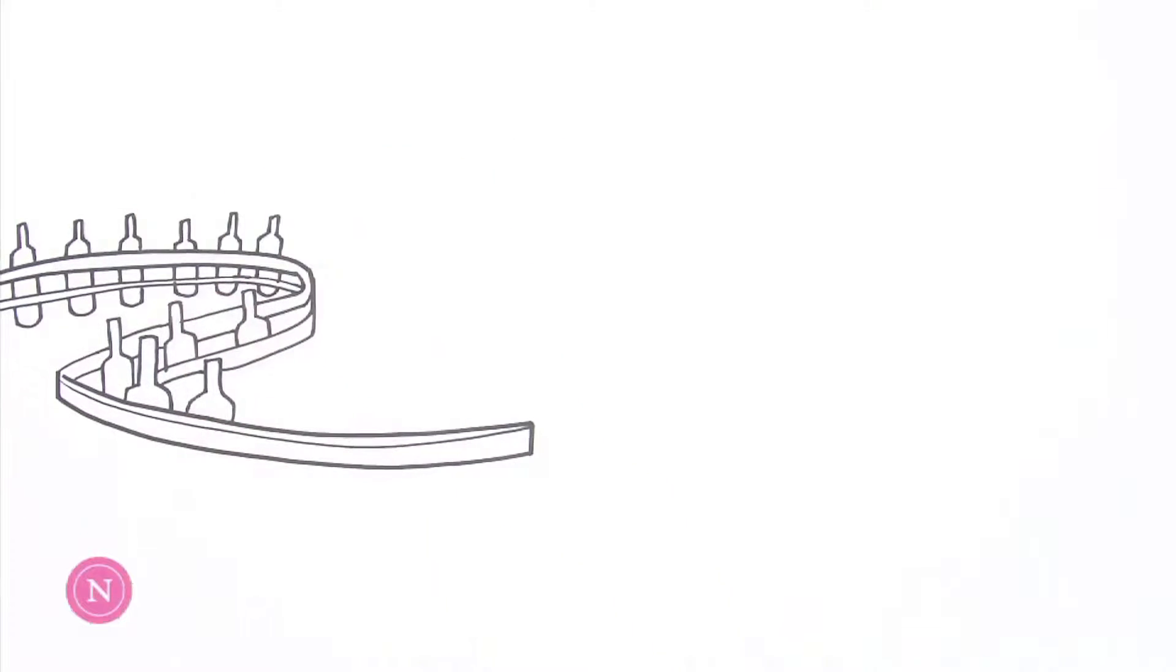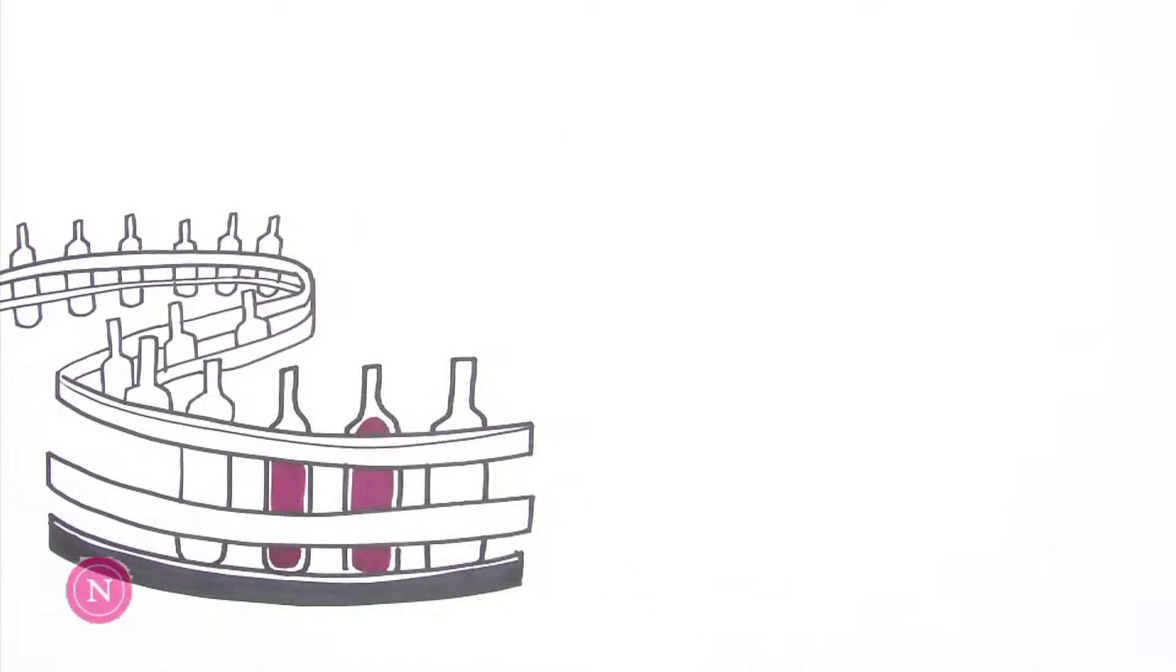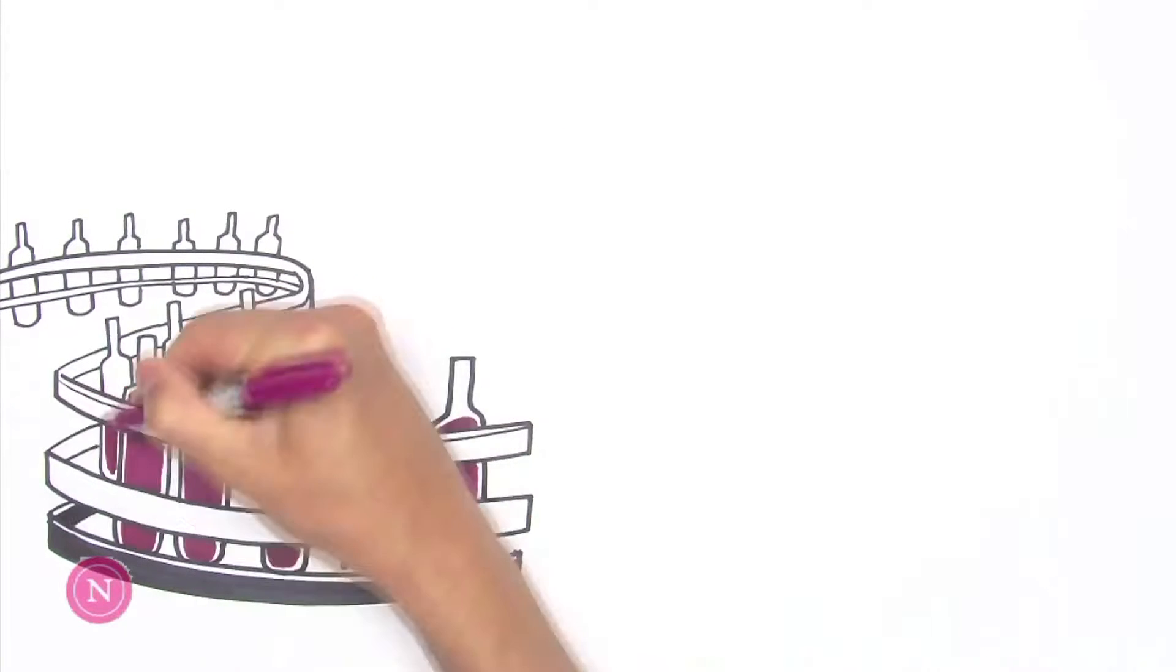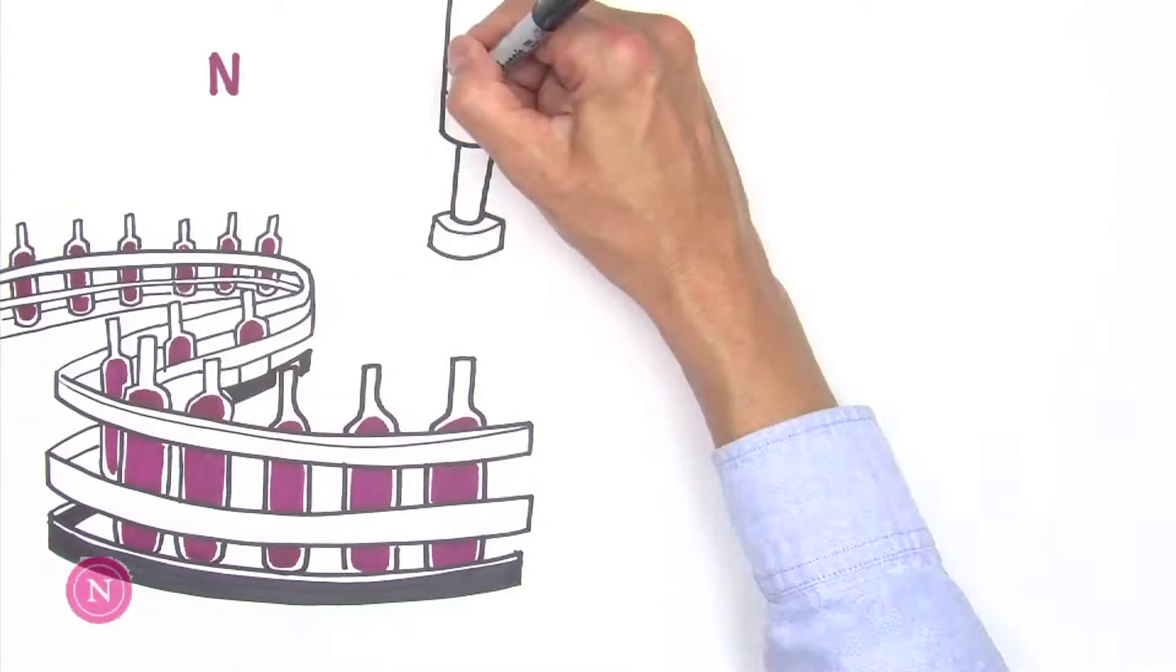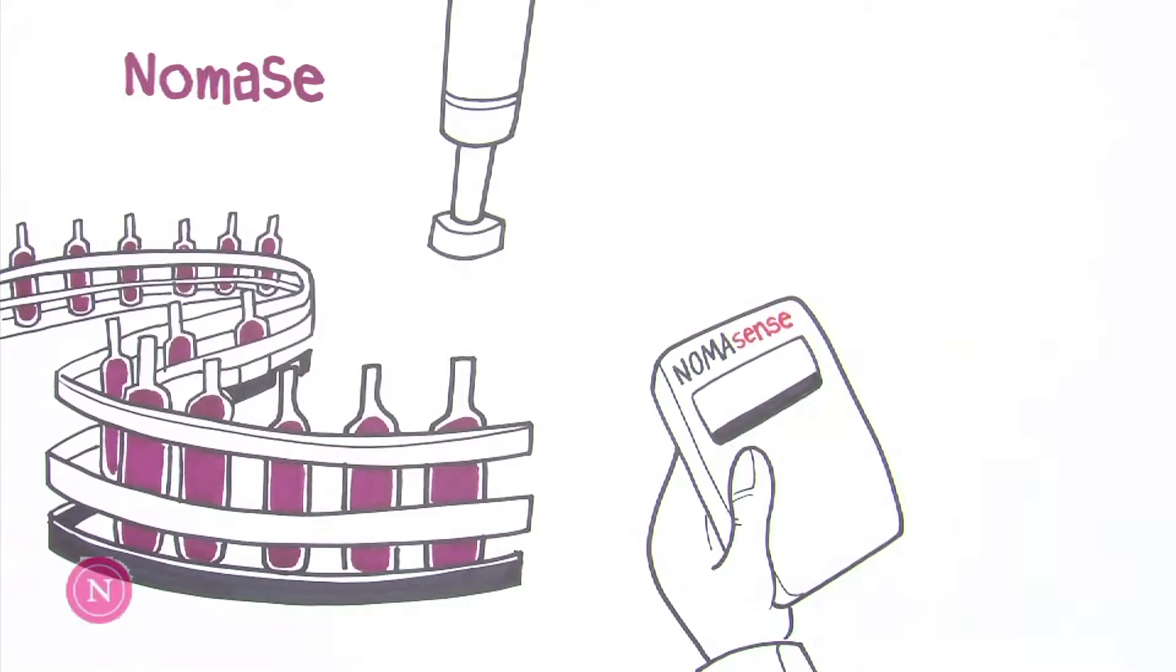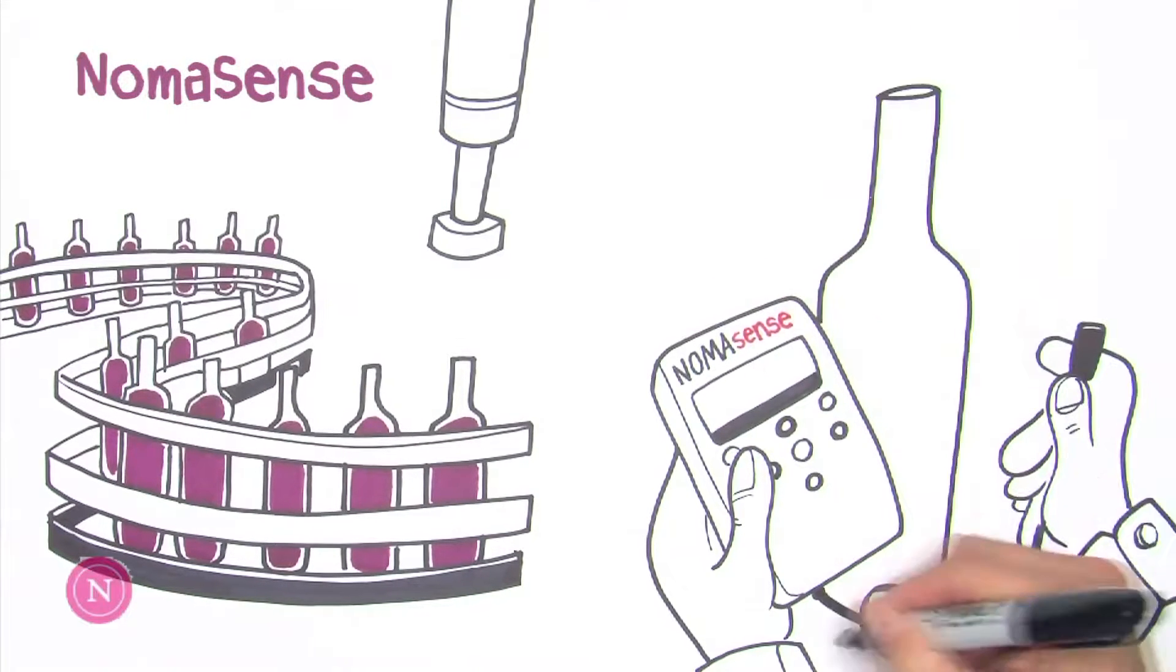Winemakers can manage and control the oxygen exposure of their wines, particularly at bottling. NomaCork has developed NomaSense analyzers that can precisely measure oxygen during winemaking and inside a sealed bottle.